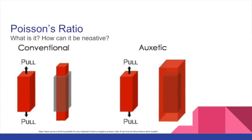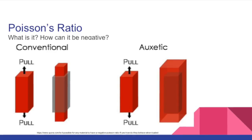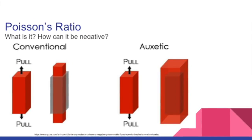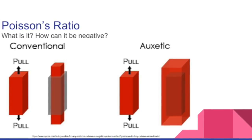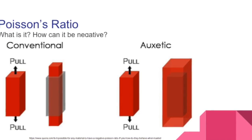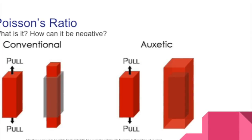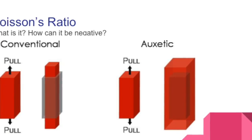Let's give everyone a quick refresher. Poisson's Ratio is the ratio of the proportional decrease in a lateral measurement to the proportional increase in length in a sample of material that is elastically stretched. When a specimen is pulled, it increases in length but decreases in width. Now on the right is an example of a material with negative Poisson's Ratio. When pulled axially, it increases in length as well as in width.